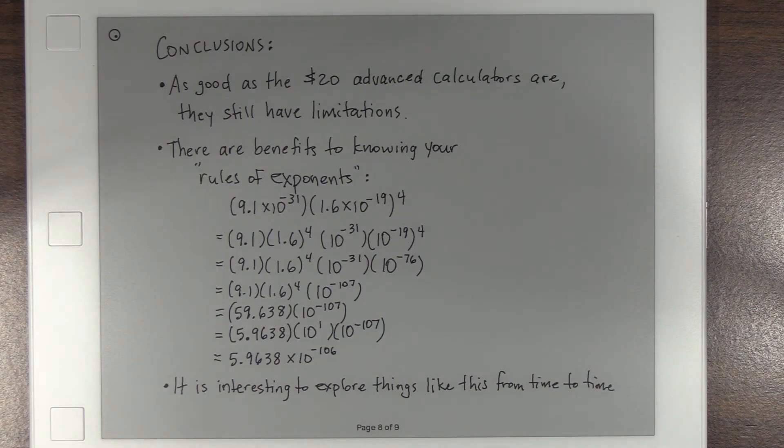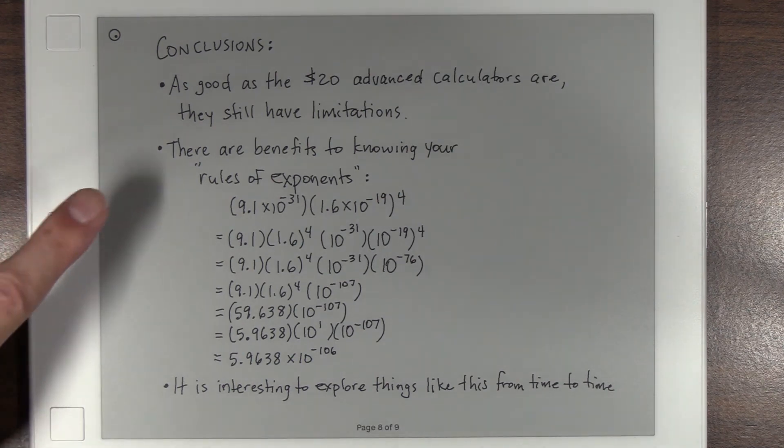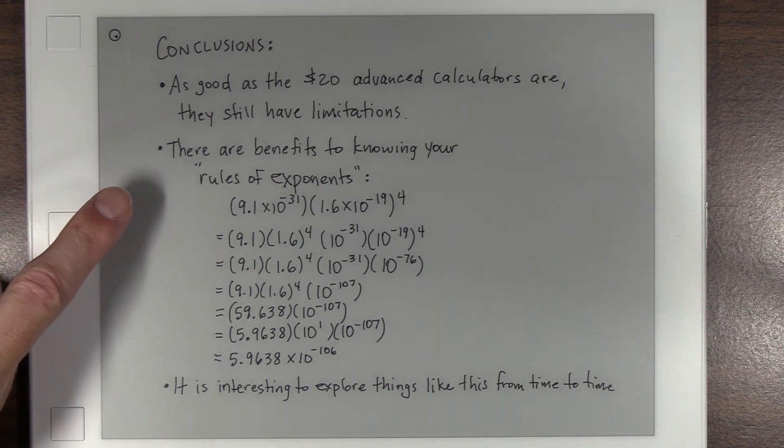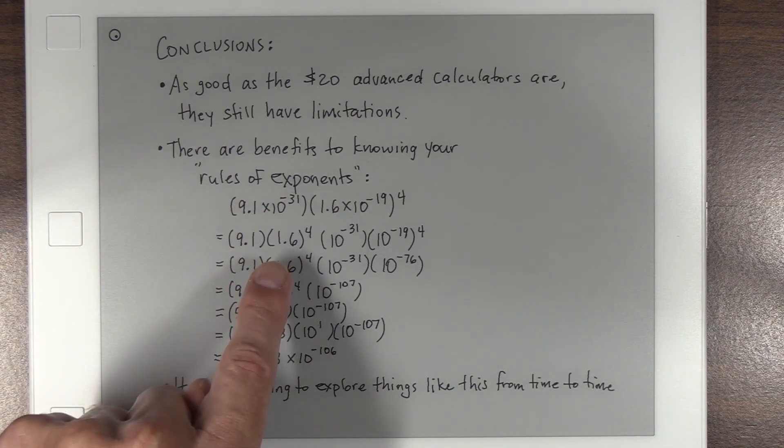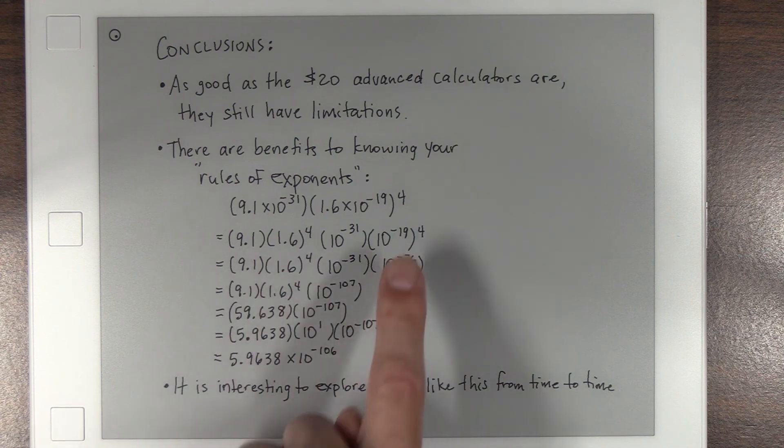What can we conclude from all this? First of all, I'd say, as good as these $20 advanced calculators are, they still have their limitations. There are benefits to knowing your rules of exponents. And the idea being, you can break out the number part. The 9.1, the 1.6, I've got to take it to the fourth power.